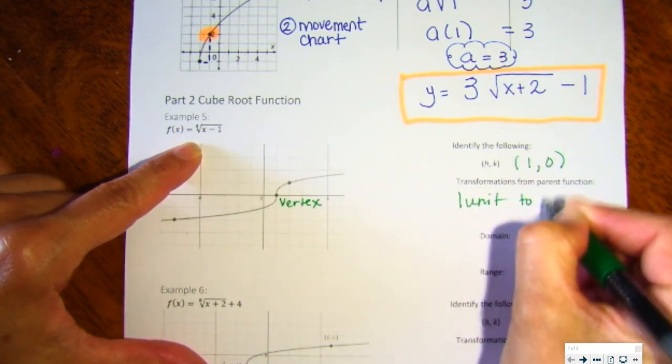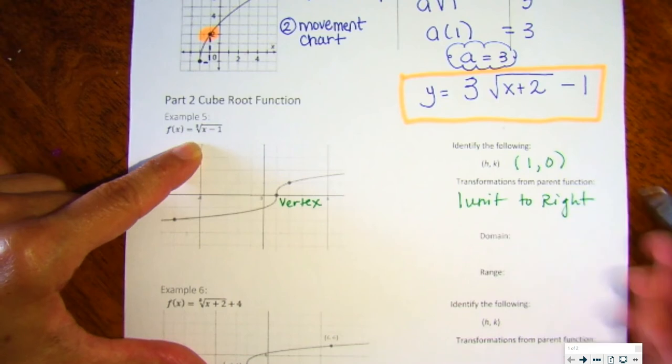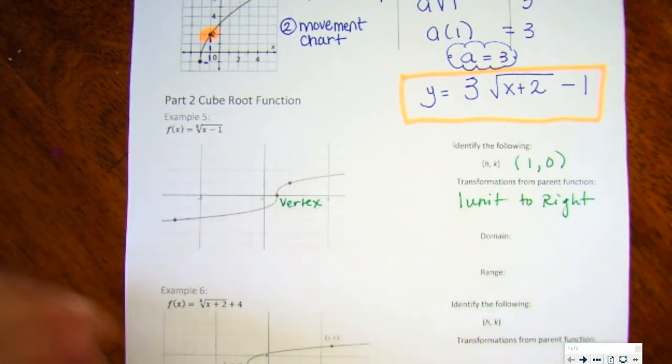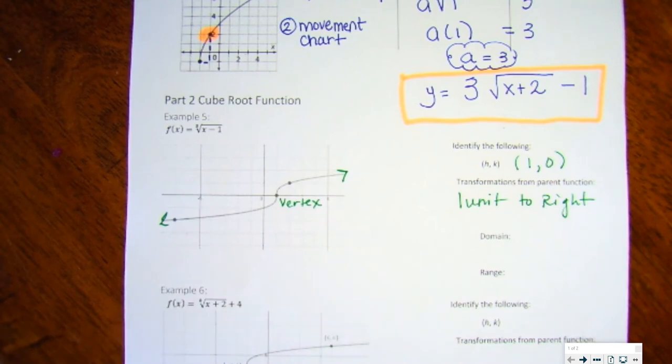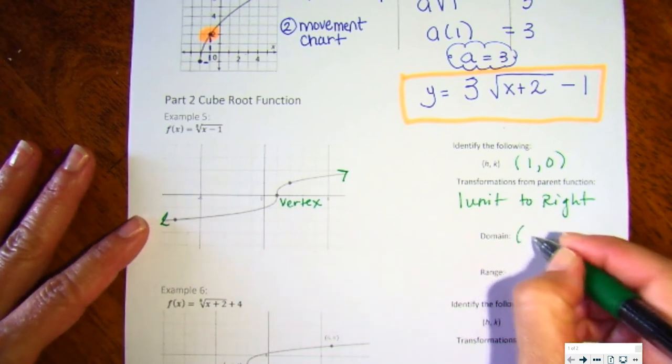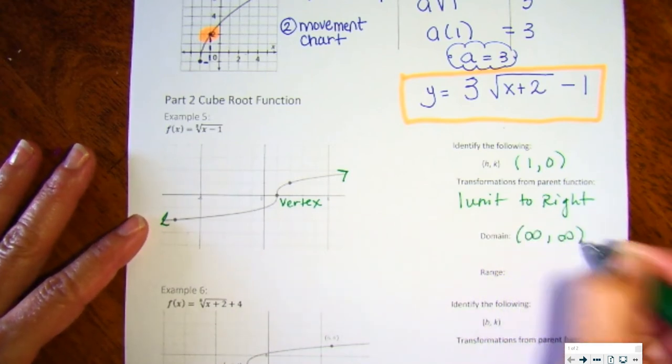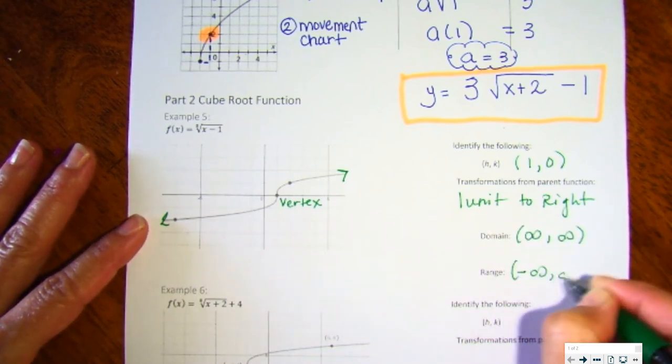And then let's take a moment and talk about domain and range. If you notice, we have two arrows on a cubic function, which means they go forever in both directions, so your domain and your range are simply negative infinity to positive infinity.